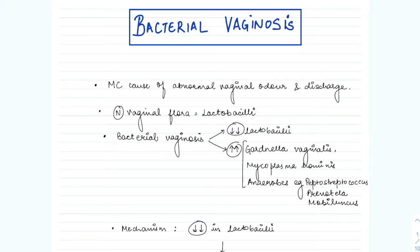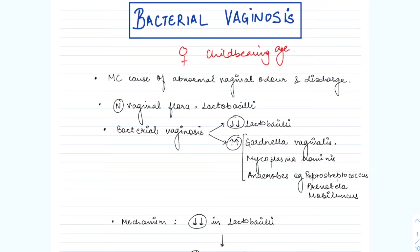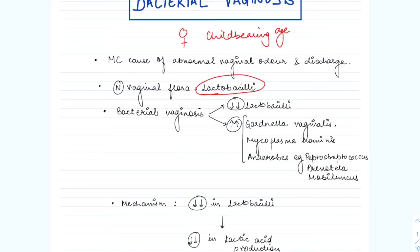Hi guys, welcome back. I am Dr. Sirpi and in this lecture I will be discussing bacterial vaginosis. Bacterial vaginosis, as the name suggests, is a bacterial vaginal infection and it commonly occurs in women of childbearing age. No specific bacteria have been implicated in causing bacterial vaginosis; rather it is a shift of the normal lactobacillus flora to other bacteria.